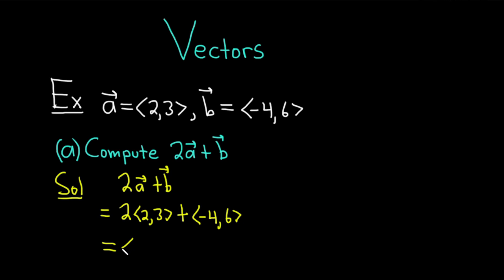So 2 times 2 is 4, and 2 times 3 is 6. If you're curious, this is actually called scalar multiplication because the number 2 is called a scalar. Plus, and then we have negative 4, 6.